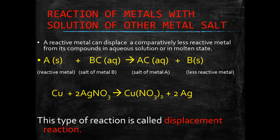The general equation is: A, which is a reactive metal, when reacted with BC gives AC plus B. Here A is more reactive than B, so it will displace the position of B and form AC or salt of metal A.